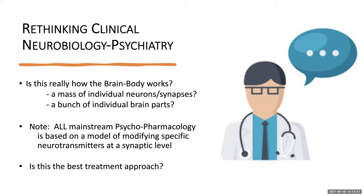It is time to rethink clinical neurobiology and psychiatry, and there are physicians and scientists throughout the world who are working on this right now. One question is: is this really how the brain and body works? Is the brain just a mass of individual neurons and synapses, and is the brain also just a bunch of individual parts? All current mainstream psychopharmacology — the prescribing of medication for emotional or behavioral disorders — is based on this model: the idea is to modify specific neurotransmitters at the synaptic level. Our question is, is this the best treatment approach?